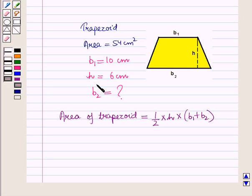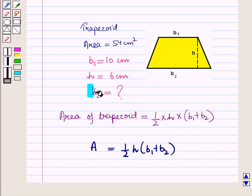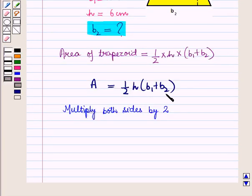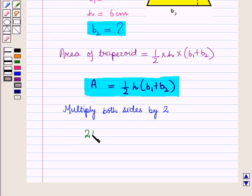Here B1 and B2 are the two parallel sides of the trapezoid. We can write this as: Area A = 1/2 × H × (B1 + B2). To find the length of base B2, we will first multiply both sides of this equation by 2. So we have 2A = 2 × (1/2) × H × (B1 + B2).